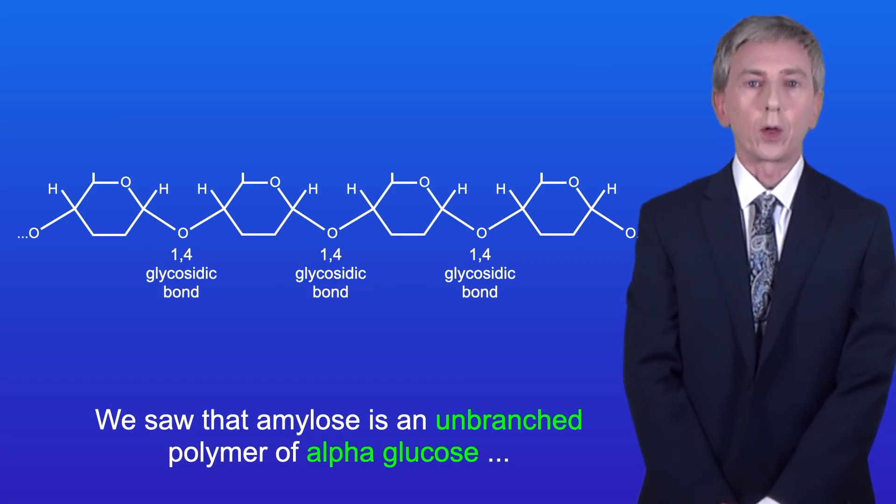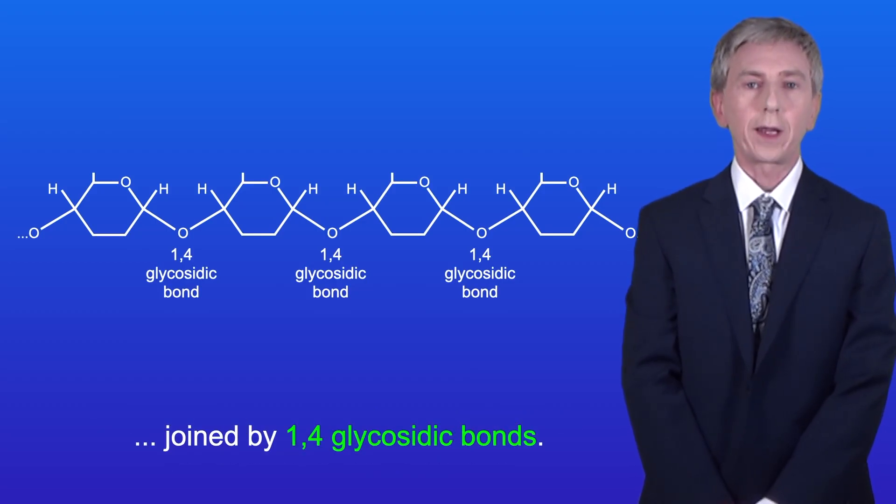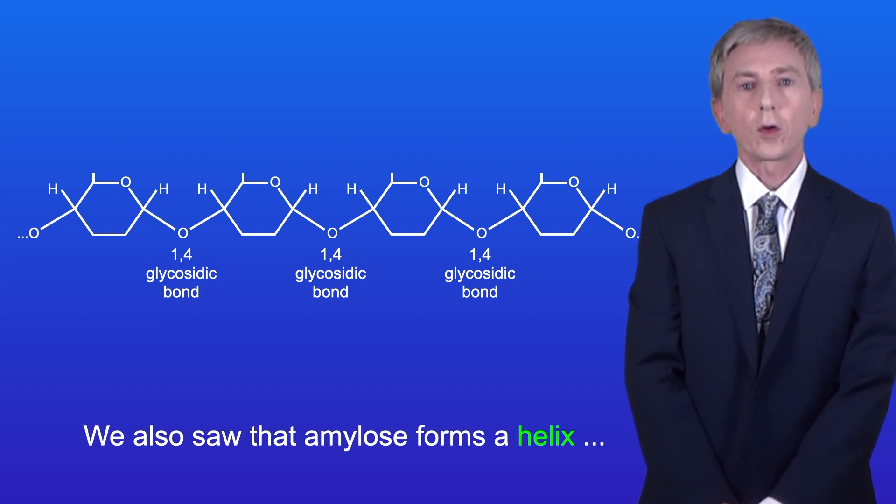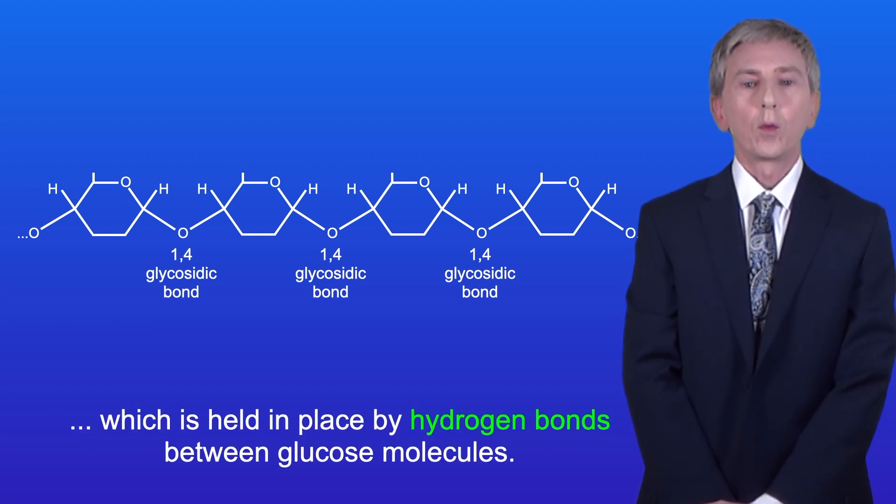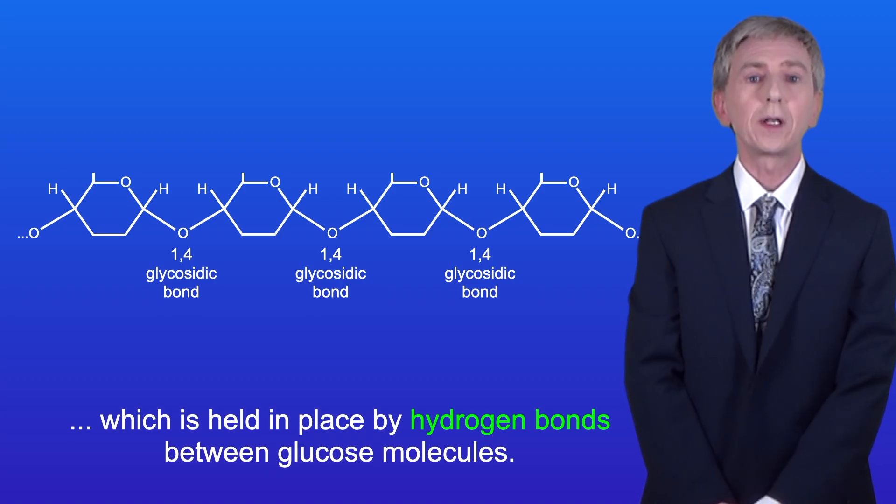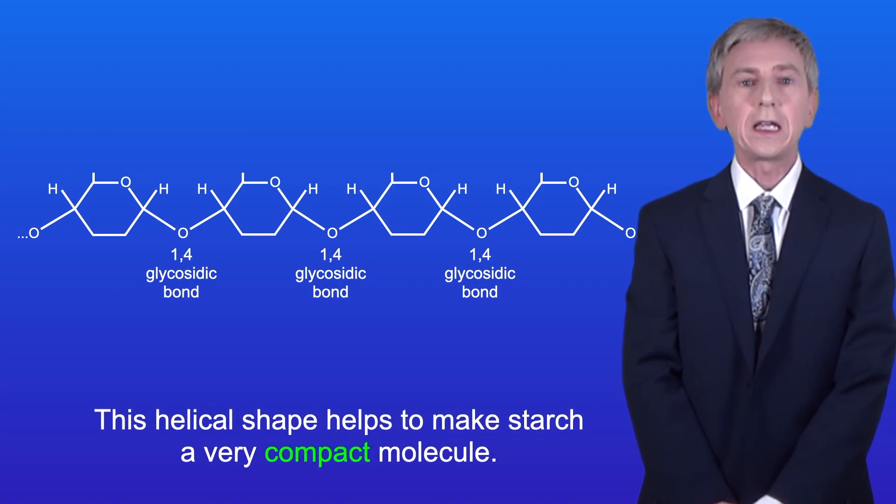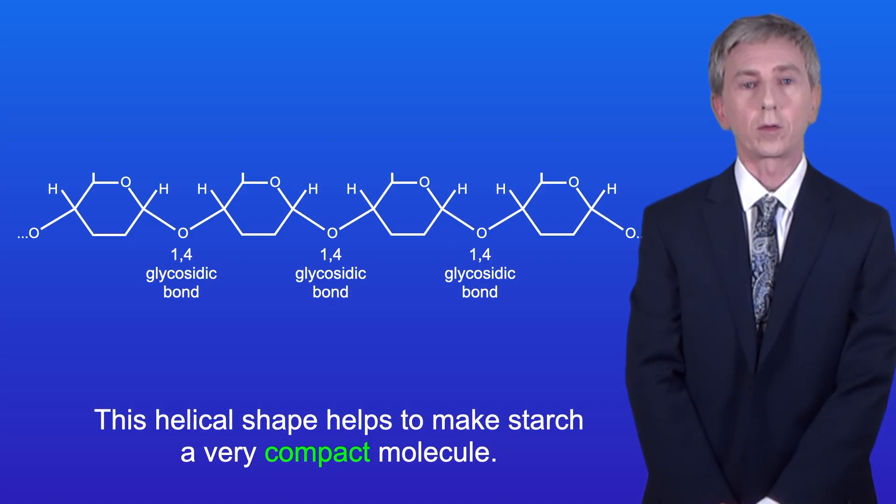We saw that amylose is an unbranched polymer of alpha glucose joined by 1,4 glycosidic bonds. We also saw that amylose forms a helix, which is held in place by hydrogen bonds between glucose molecules, and this helical shape helps to make starch a very compact molecule.